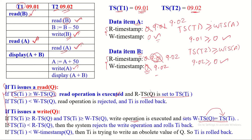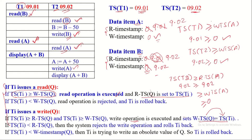Similarly, we have to apply the same rules on write on A by T2. Since write is in conflict with both read and write, the transaction timestamp must be compared with both read timestamp and write timestamp of A. Timestamp of T2 is 9:02, read timestamp of A is now 9:02, and write timestamp of A is 0. In both cases it satisfies the condition. That is why this write operation on A can be permitted to execute, and immediately write timestamp of A must be updated with the timestamp of T2.